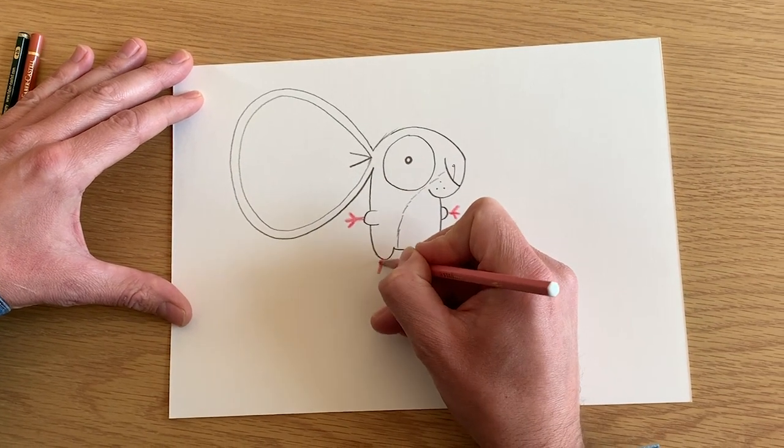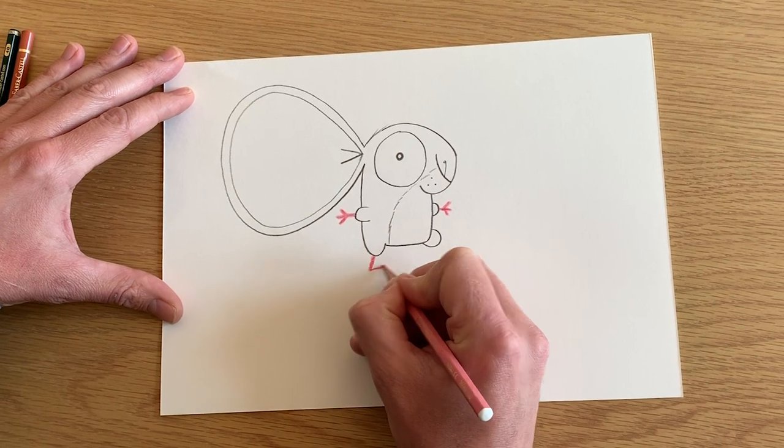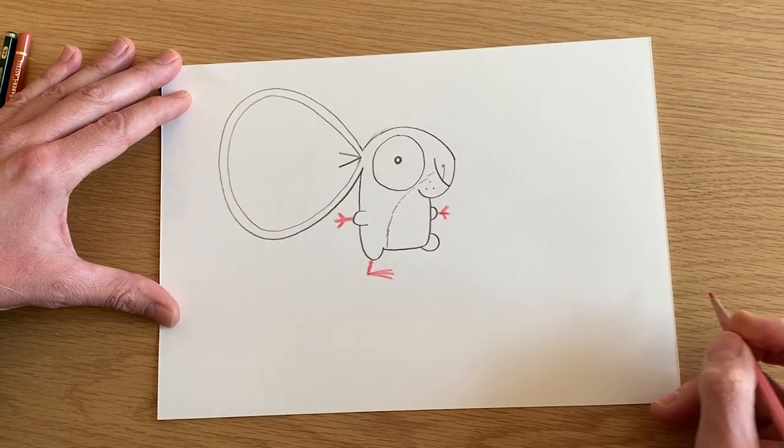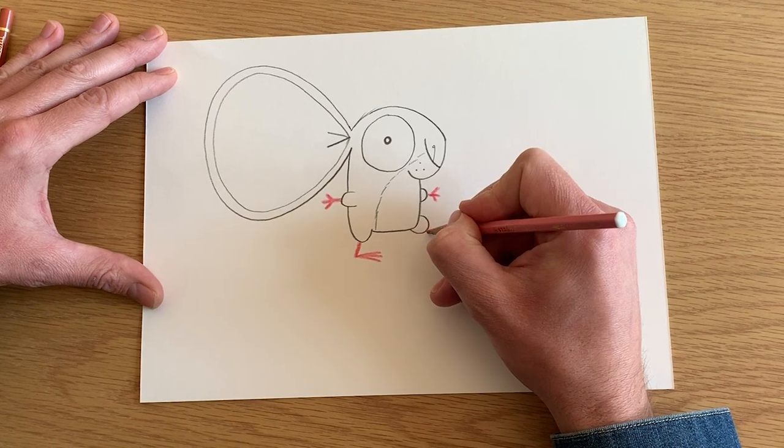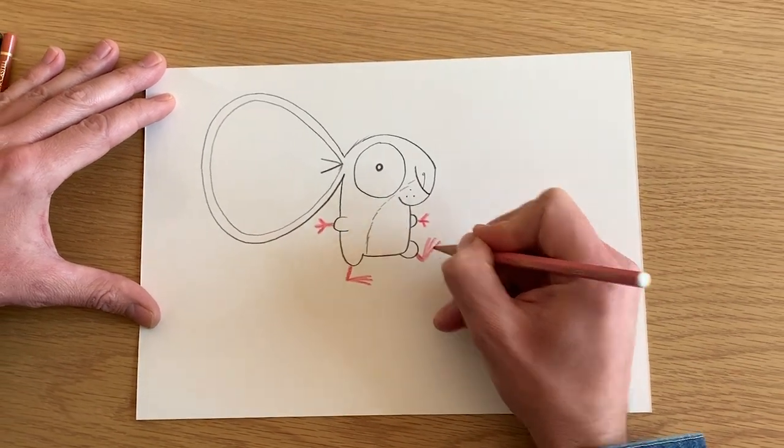And then for his feet you do a line down and then one, two, three toes. And the same on this foot. One, two, three toes.